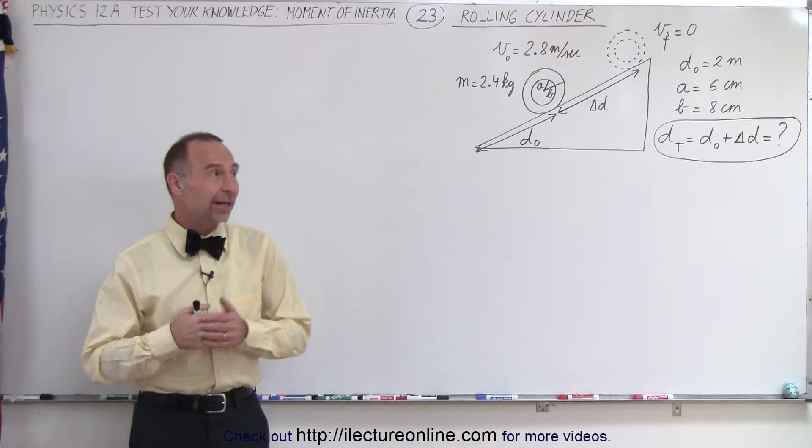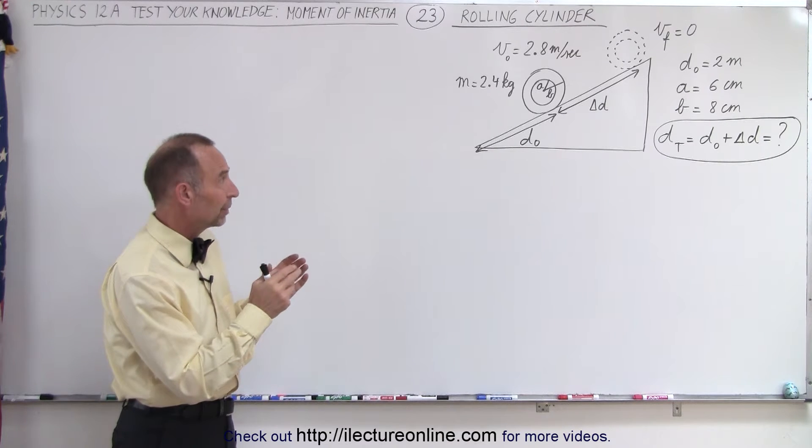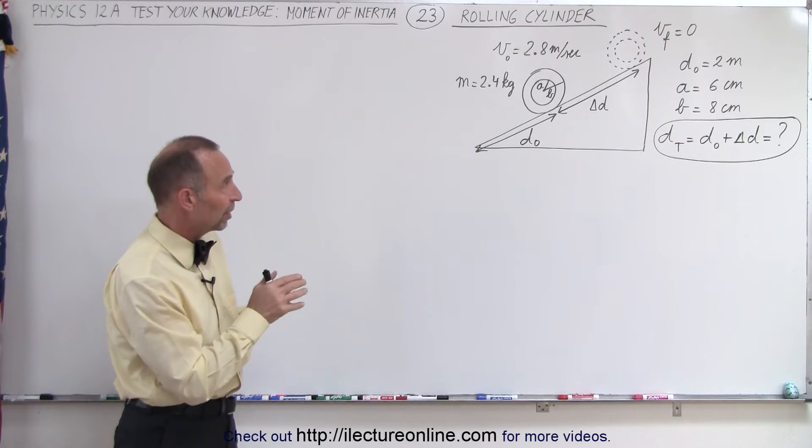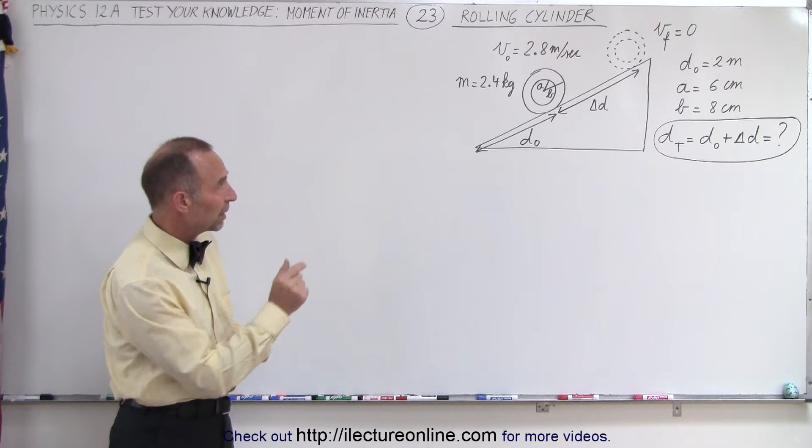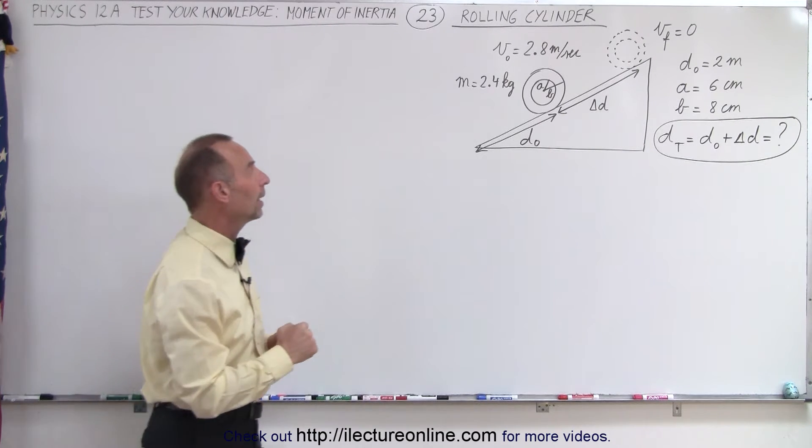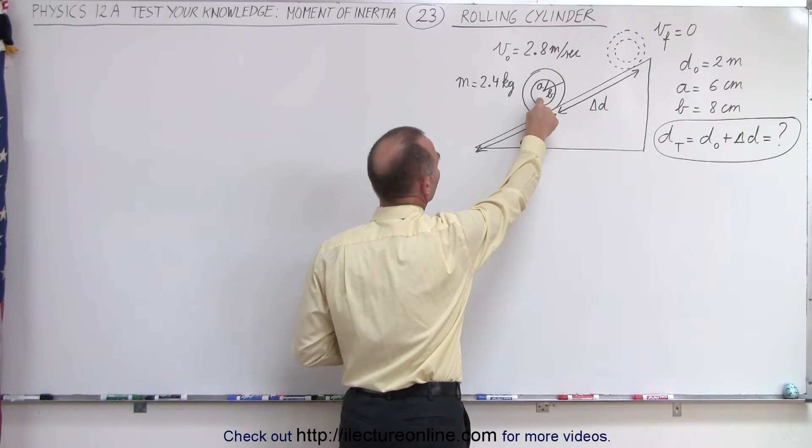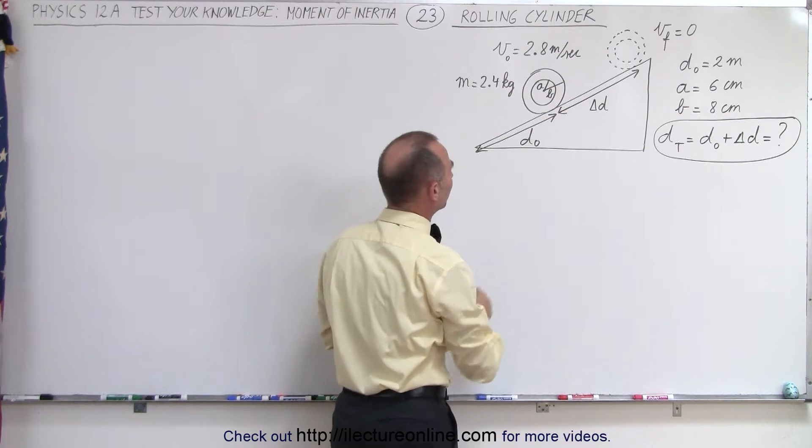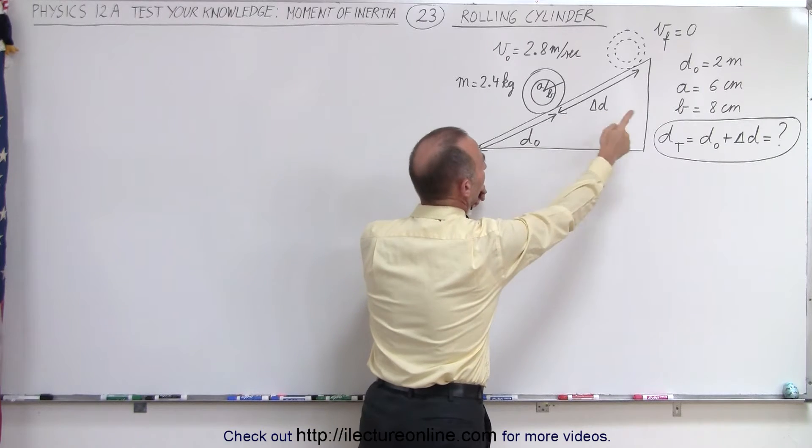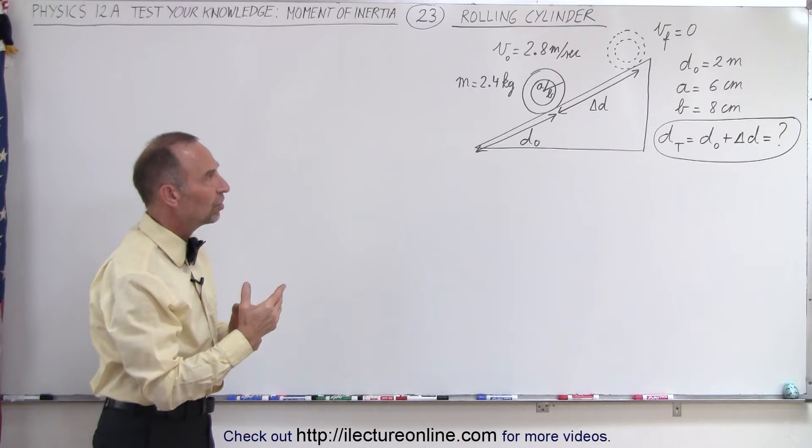Welcome to White Lecture Online. Our next problem is a cylinder that has a thickness of about 2 centimeters. The outer radius is 8 centimeters, the inner radius is 6 centimeters. It's rolling up an incline. It has a mass of 2.4 kilograms and its initial velocity at this moment is 2.8 meters per second after it's reached a height of 2 meters up the incline.